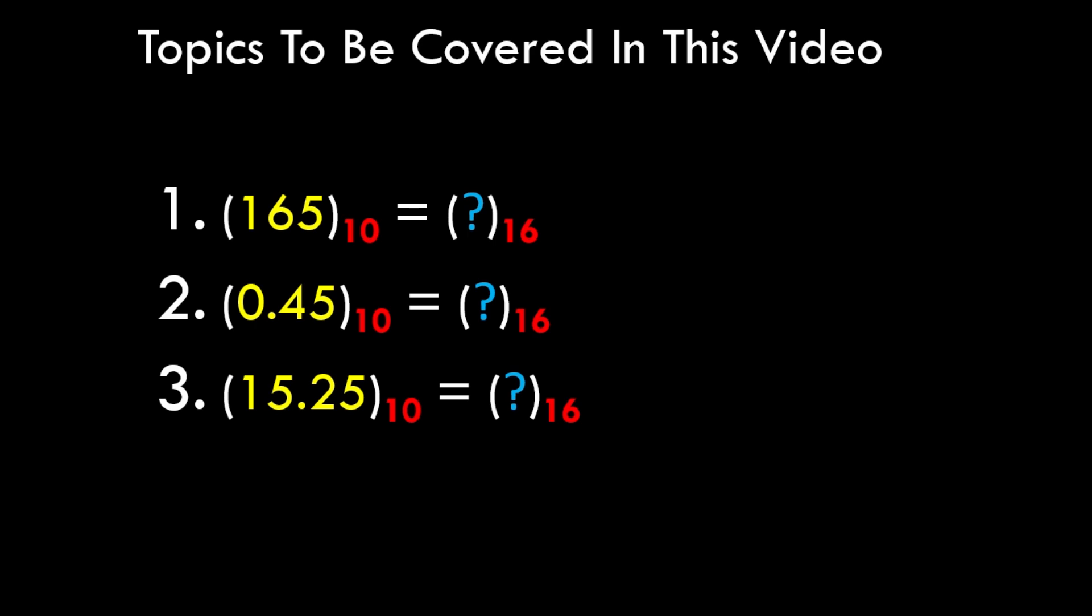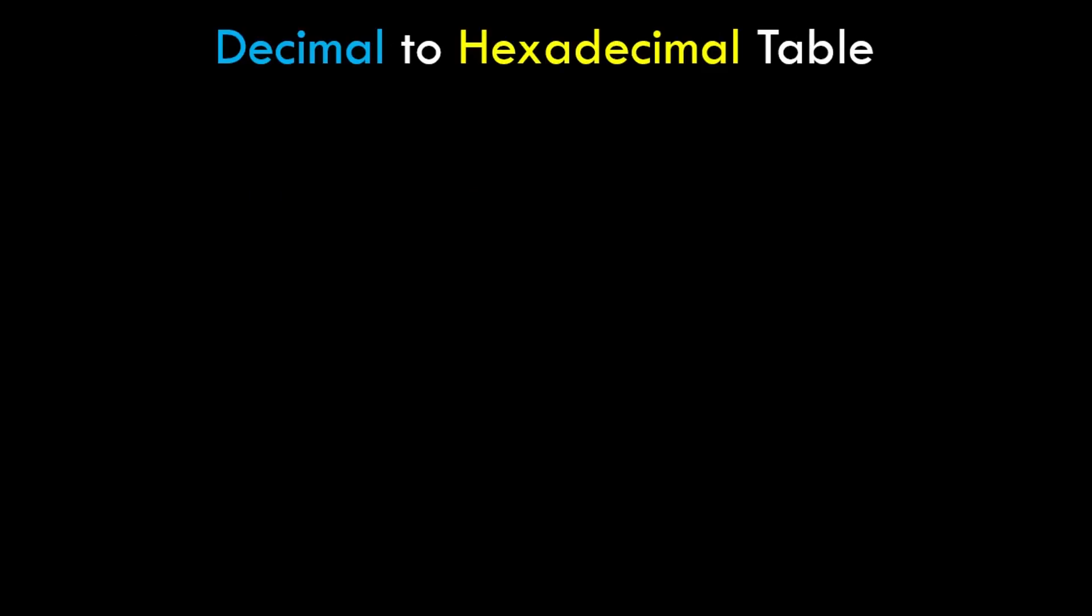Before we start solving sums, I'd like to show you a conversion table between decimal to hexadecimal values. Now we know the base value of hexadecimal number system is 16, so there has to be 16 unique symbols to denote decimal values.